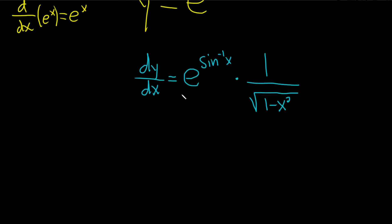We can be a little more pro, maybe by writing it upstairs, it looks better. So this is e to the inverse sine of x over, and then we have the square root of 1 minus x squared. And that would be the final answer.